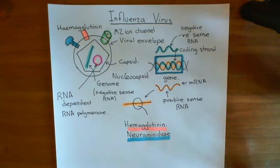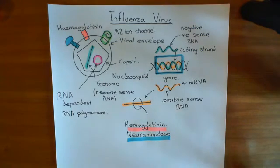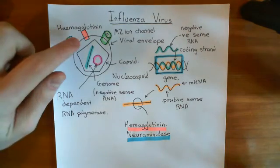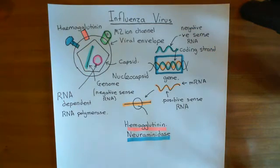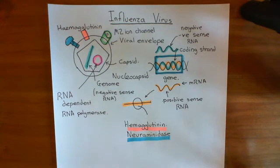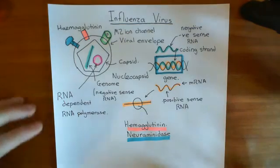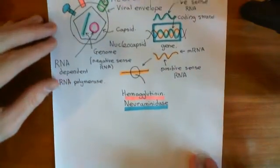Welcome to this next video in which we are discussing the replication cycle of influenza virus. Before we begin our discussion of how the virus particle is going to enter the cell, I want to do a bit more of an in-depth analysis of hemagglutinin, because hemagglutinin is going to be the protein that binds to a molecule on the surface of human cells, and it's going to be how the virus particle enters the cell.